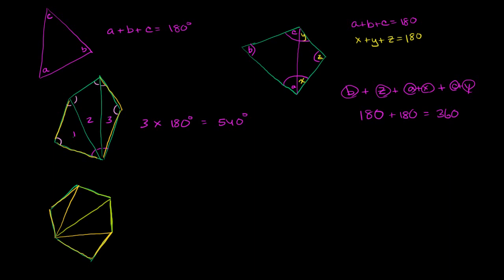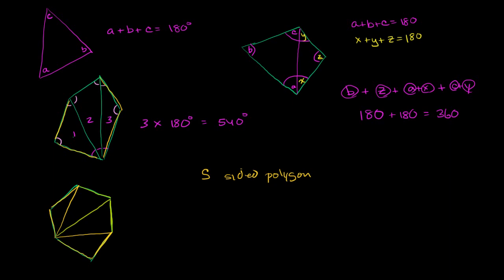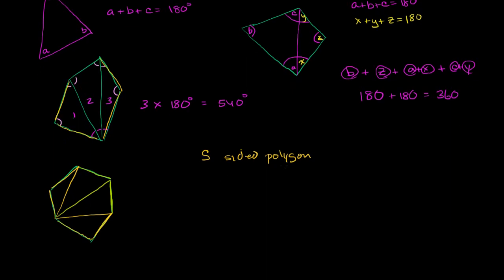So in general, it seems like, let's say that I have an S-sided polygon. We already saw the case for four sides, five sides, and six sides, so we can assume that S is greater than four sides. And I want to figure out how many non-overlapping triangles that perfectly cover that polygon I can fit inside of it. Then I just have to multiply the number of triangles times 180 degrees to figure out the sum of the interior angles of that polygon. So let's figure out the number of triangles as a function of the number of sides.